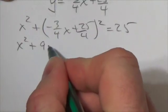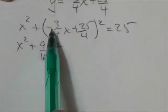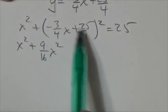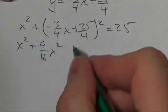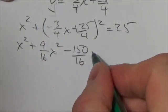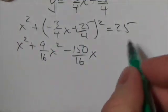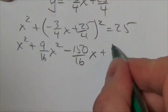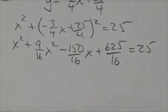Now the first term will be 9 sixteenths x squared and then we're going to have two terms that are going to be negative 75 over 16. So altogether that's going to be negative 150 over 16 x. And then here it's going to be 25 over 4 squared, so it'll be 625 over 16 equals 25.